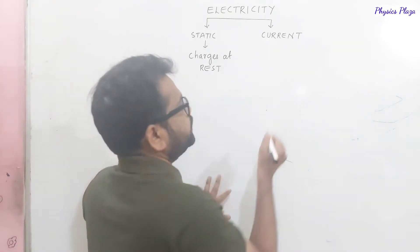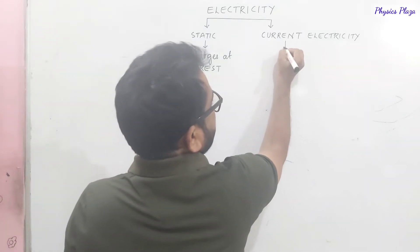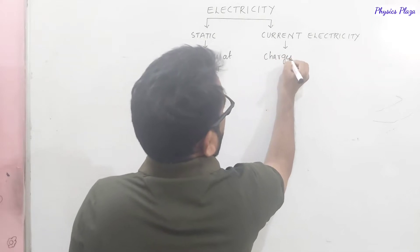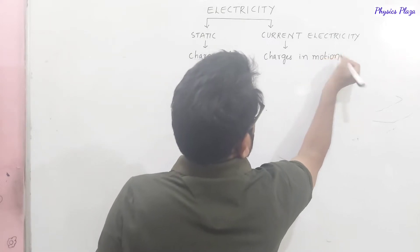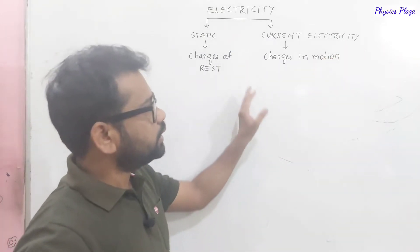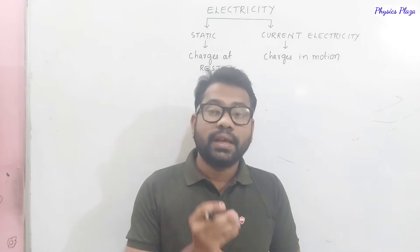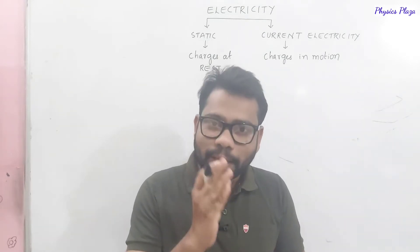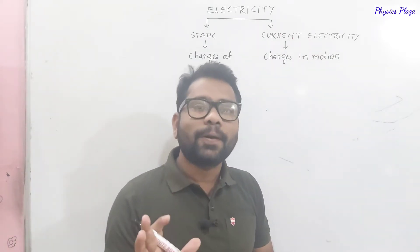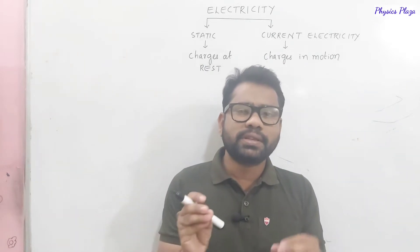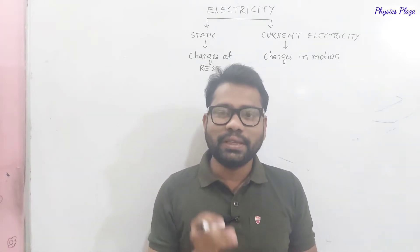Whereas in current electricity, we discuss about the charges in motion. What happens when charge is in motion, what are the effects — those things we discuss in current electricity. So in static electricity we discuss charges at rest, whereas in current electricity we discuss charges in motion. Our discussion is only about current electricity, and only basic concepts will be introduced in this session.